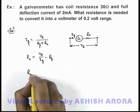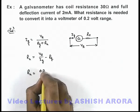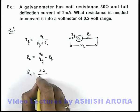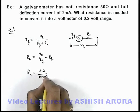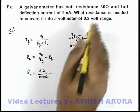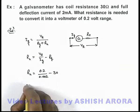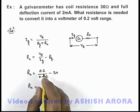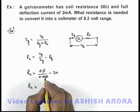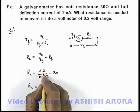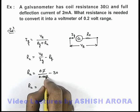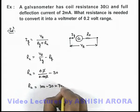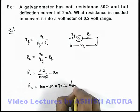So if we substitute the values: the range of the voltmeter is given as 0.2 volt, the full deflection current is 2 milliamperes, so that will be 0.002 amperes, and the galvanometer coil resistance is 30 ohms. The value of R_h works out as 0.2 divided by 0.002, which gives 100, minus 30, equal to 70 ohms. That will be the answer to this problem.